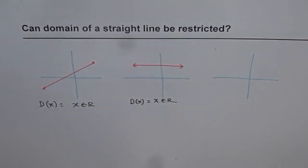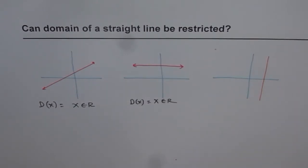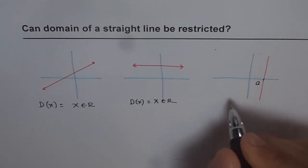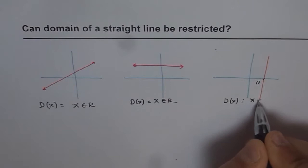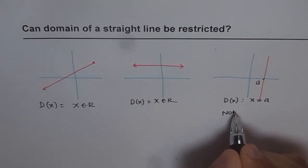But how about the line which is vertical? Now in this case, let's say the point here is a. In this case domain is actually x equals to a, right? Well indeed this is not a function, of course. This is not a function.